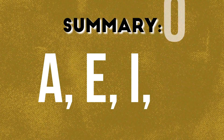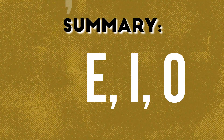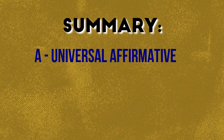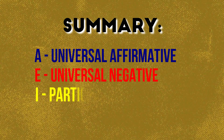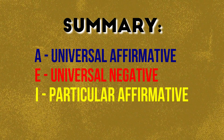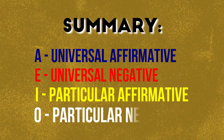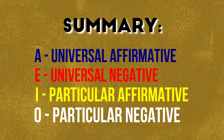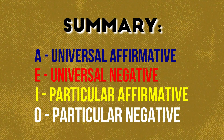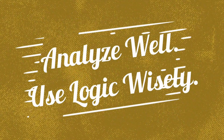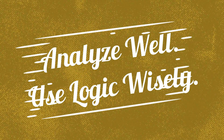Let's summarize. We use the first four vowels as mnemonics to easily remember the terms: A as universal affirmative, E as universal negative, I as particular affirmative, and O as particular negative. Keep in mind that they can appear tricky, so analyze well and use your logic wisely.